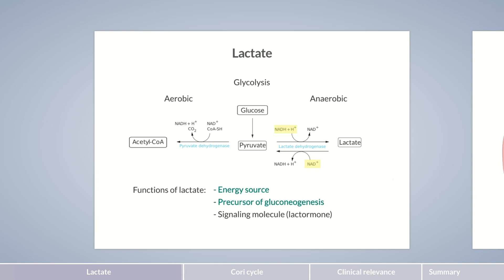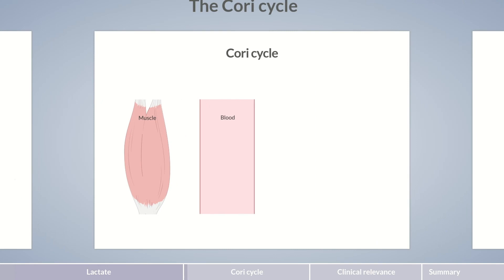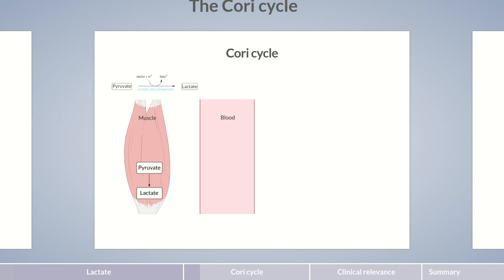Let's take a closer look at the role of lactate in energy metabolism. In skeletal muscle cells that depend on aerobic metabolism, the electron transport chain is unable to oxidize NADH and H+ back to NAD+. This results in an excess of NADH and H+. The lactate dehydrogenase in skeletal muscle cells then converts pyruvate into lactate, generating NAD+ in the process. The amount of NAD+ is just sufficient to maintain glycolysis. However, lactate can't be further metabolized in skeletal muscle cells, so it's transferred into the bloodstream.